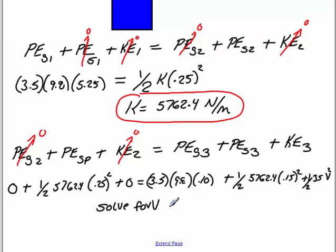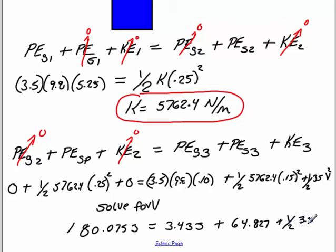And now all we have to do is solve for v. I'm going to do the left side first. That's going to be 0.5 times 5762.4 times 0.25 squared. So on the left side, I will get 180.075 joules, is equal to 3.5 times 9.8 times 0.1. That's going to give me 3.43 joules, plus 0.5 times 5762.4 times 0.15 squared. That's going to give me 64.827 joules. And then plus 1/2 times 3.5 v squared.